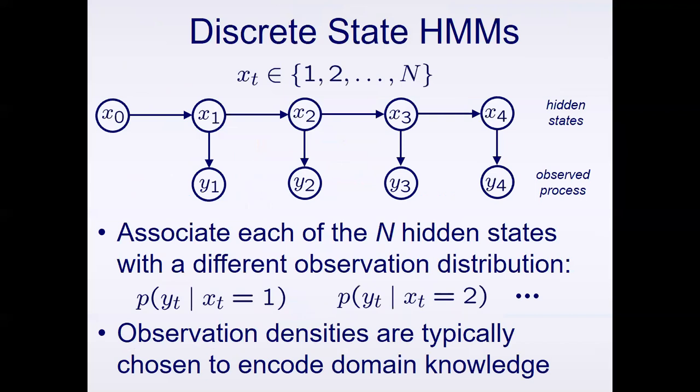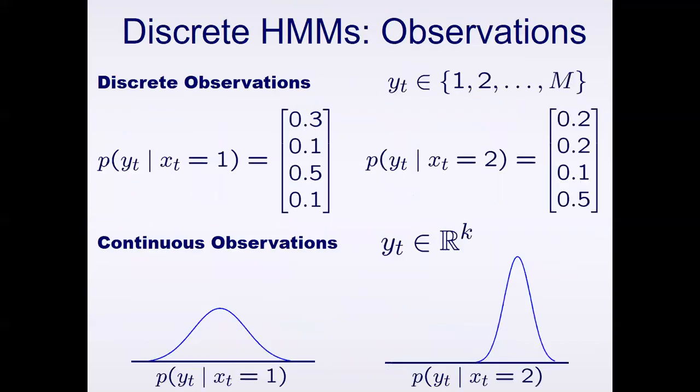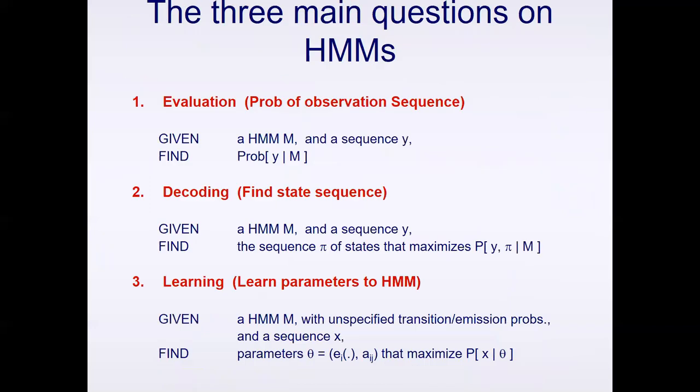With our discrete state HMMs, we assume we have some finite states. Our observed processes could be continuous or discrete. If we have discrete observations, we'll model each y random variable using some discrete model. The y's could also be continuous — we can model them using a Gaussian or something similar. In either case, given our Markovian and graphical assumptions, these probabilities are conditioned only on the current state at time t.